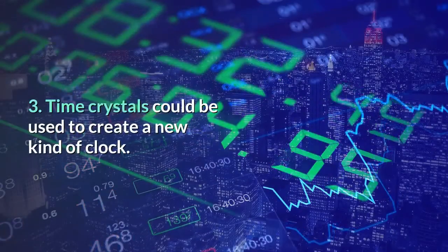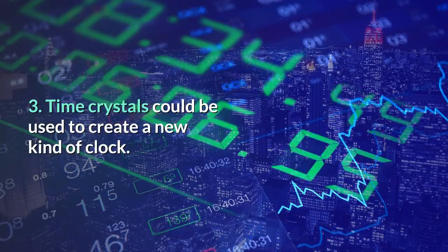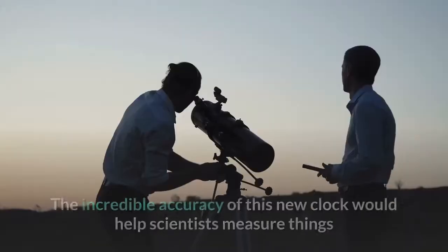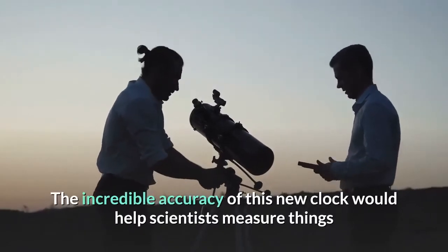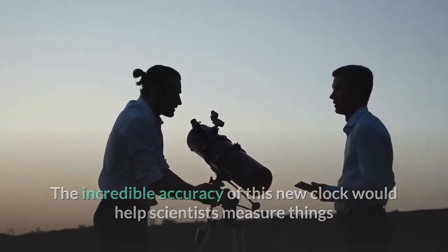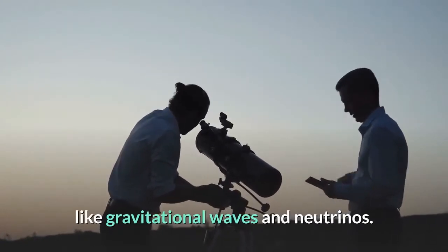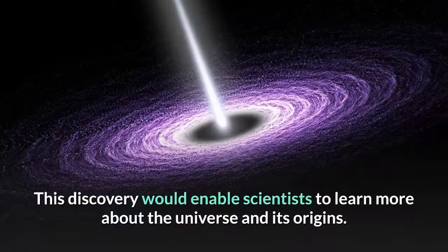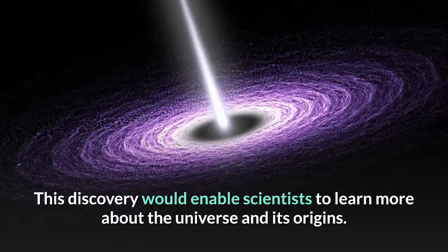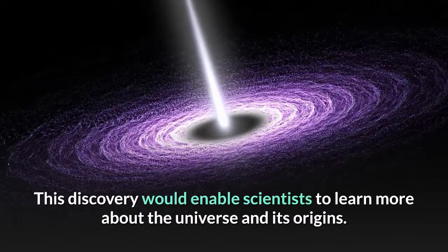Number three, time crystals could be used to create a new kind of clock. The incredible accuracy of this new clock would help scientists measure things like gravitational waves and neutrinos. This discovery would enable scientists to learn more about the universe and its origins.